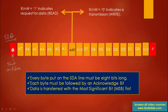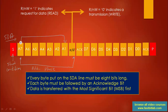After the start condition, the address phase follows. The address phase is of 8 bits. In the address phase, the first 7 bits are actually the address of the slave — this is the 7-bit slave address — and the remaining 1 bit decides the read or write operation. This is usually called as R/W bar or read-write bit.